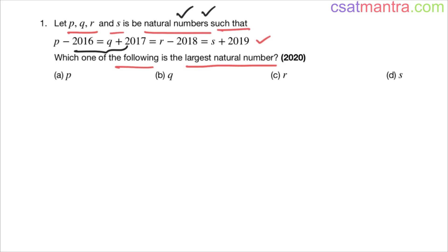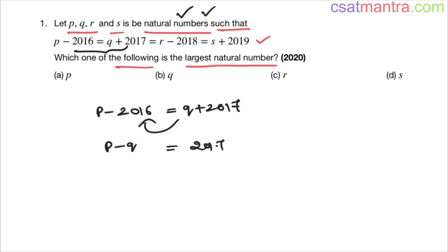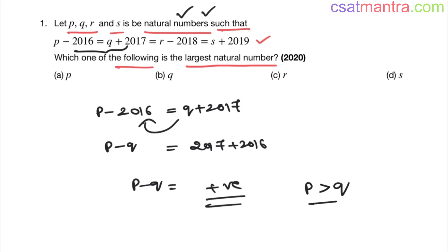Now let's take these two: p minus 2016 equals q plus 2017. Bringing q to this side: p minus q equals 2017 plus 2016. This is basically positive. That means p is greater than q — because for this result to be positive, p should be greater than q.